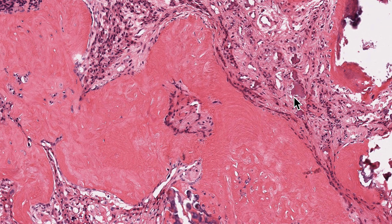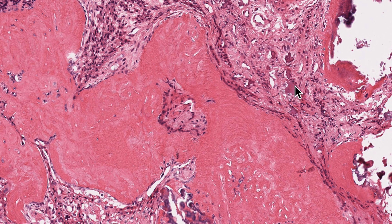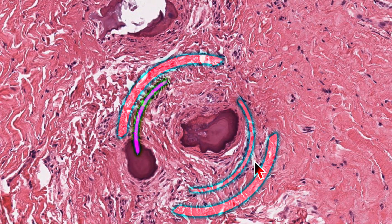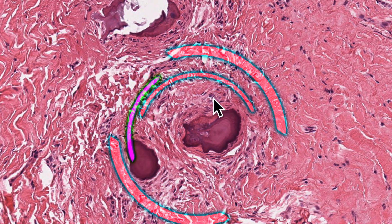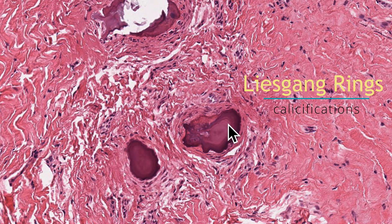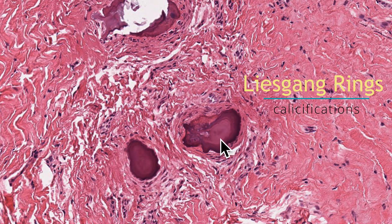Coming to the calcifications — these calcifications are globular, amphophilic, with a typical lamellated appearance or concentric rings of calcifications. Here we see two focal spots of calcifications and if you keenly notice, the calcification is happening by layers. This concentric deposition of calcium salts is what we typically call Liesegang rings of calcifications.